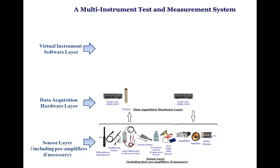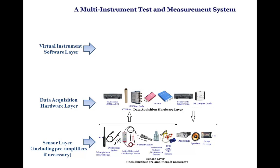The data acquisition hardware layer contains hardware such as sound cards, Virtins Technologies real-time analyzers, Virtins Technologies USB digital storage oscilloscopes, and National Instruments DAQMX cards. This layer scales, conditions, and quantizes the electronic signals passed on by the sensor layer. Together with the sensor layer, it defines the measurement accuracy and precision of the multi-instrument system.